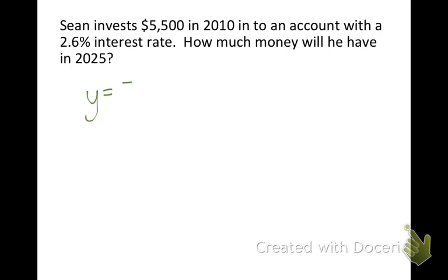So he begins with $5,500. And we need to change our percent to a decimal. I know it has a decimal in it already, but we need to still move it to the left, too. So we're going to get 0.026 to the T. Okay, and it looks like from 2010 to 2025, there were 15 years, so plug 15 in for T.